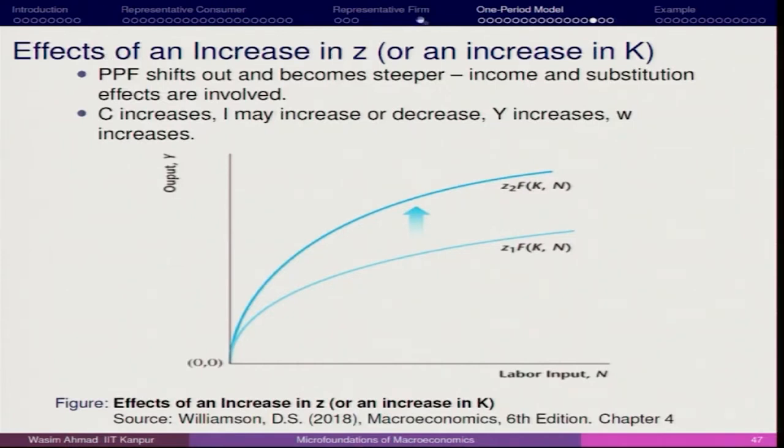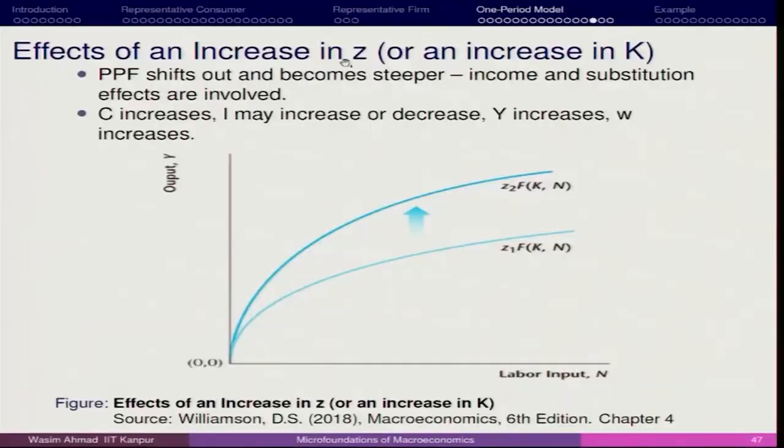When we go for increasing G, which means that factor productivity is increasing — so better technology, maybe good weather, better working conditions. These things are part of the productivity factor and lead to an increase in the better productivity of the representative consumer.